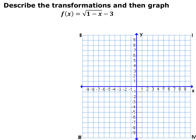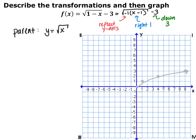Here we have f(x) = √(1 − x) − 3. Whenever there's something being multiplied by x — in this case a negative one — we always need to factor that out first before reading our transformations. Factoring out the negative one inside the square root gives us √(−1·(x − 1)) − 3. So our parent function is y = √x, we're reflecting across the y-axis, shifting right 1 because of the x minus 1, and shifting down 3 from the minus 3 outside.